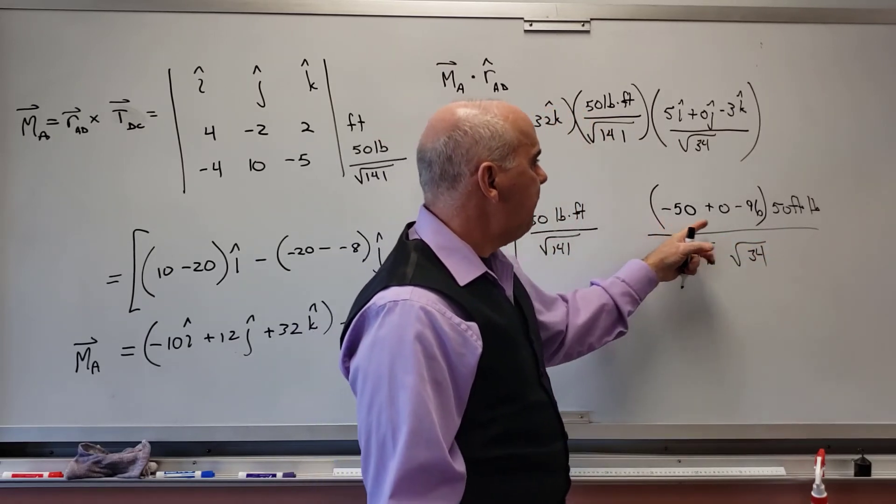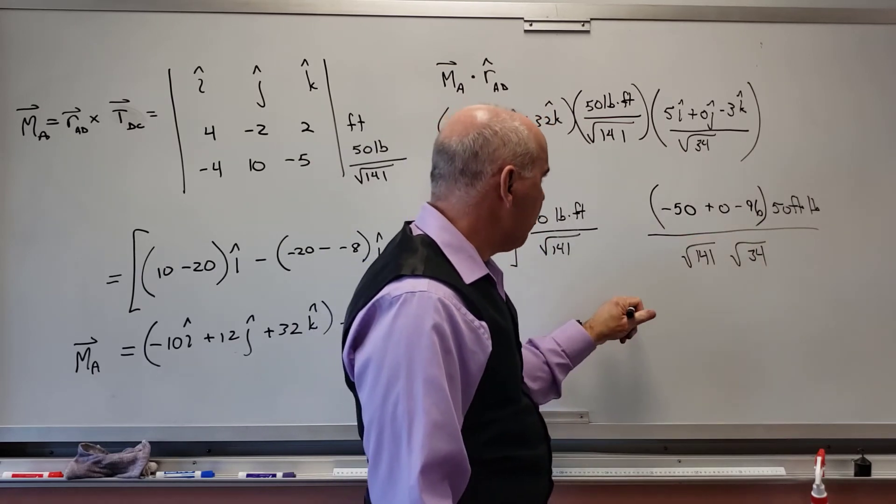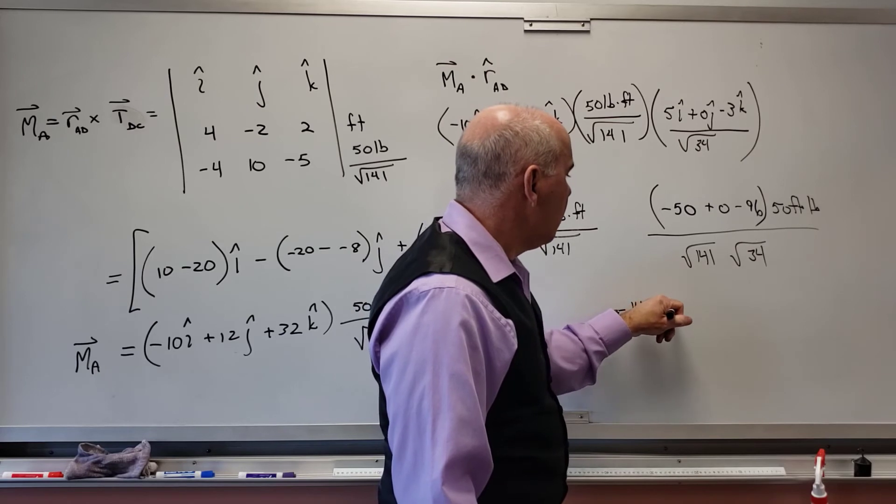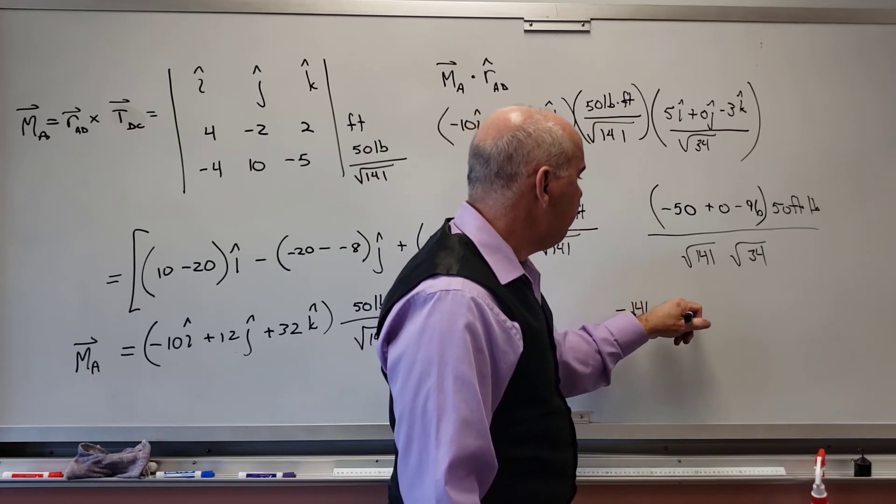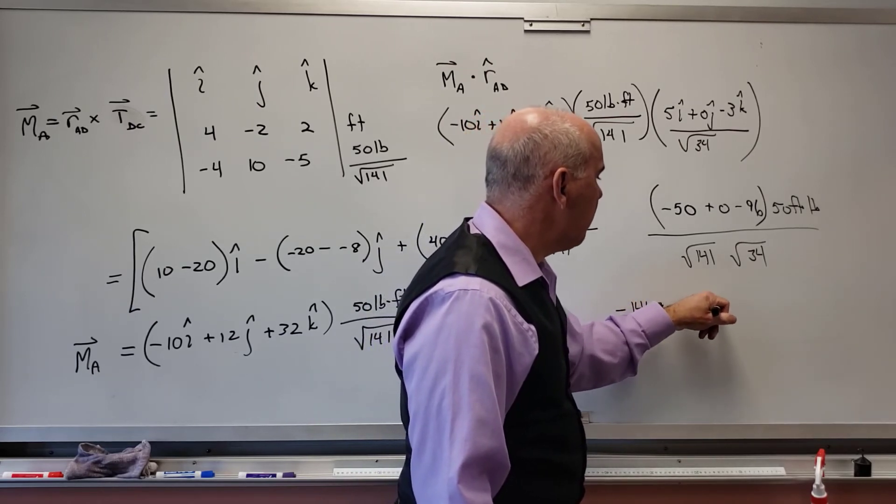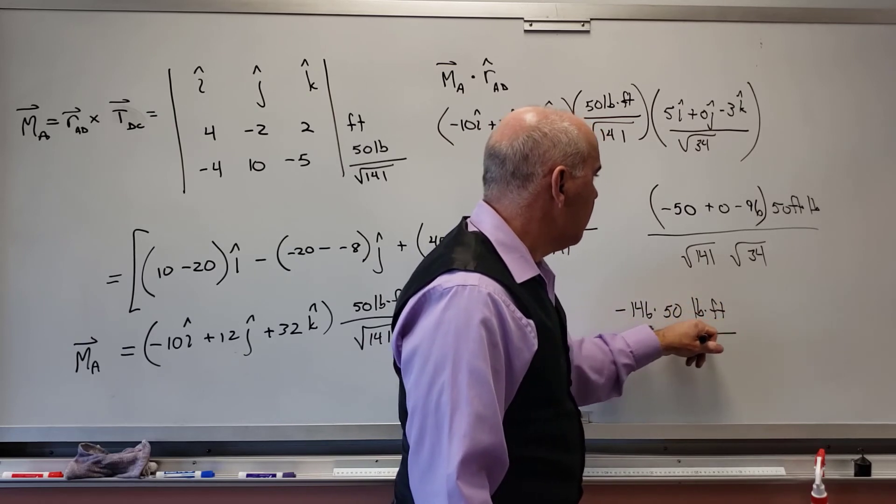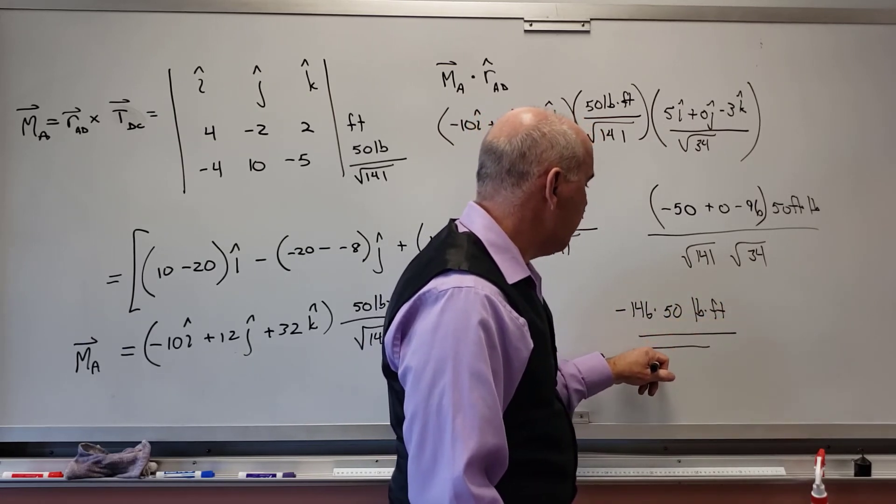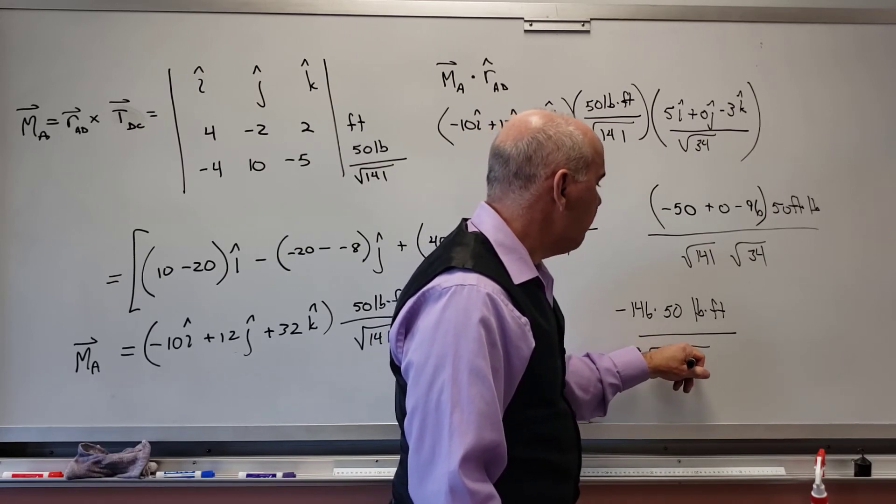And then don't forget your 50 pound-feet. And then radical 141 times radical 34. And so -50 and -96 is -146. So I get -146 times 50 pound-feet.